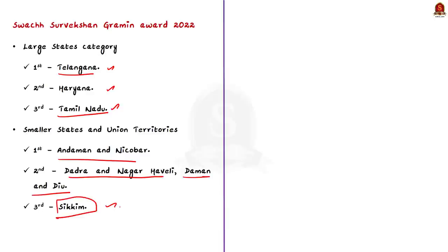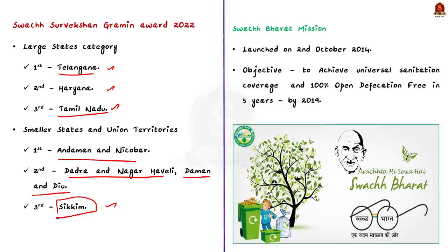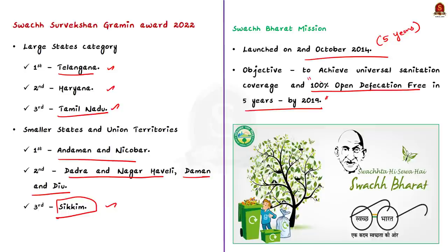In this context, let us learn about Swachh Bharat Mission and the Swachh Sarvekshan Gramin Award. The Swachh Bharat Mission was launched on 2nd October 2014 for a five-year period. The objective was to achieve universal sanitation coverage and to achieve the target that India would be 100% open defecation free in five years, that is, to achieve Swachh Bharat or clean India by 2019.